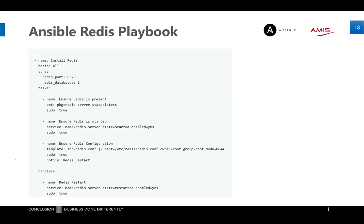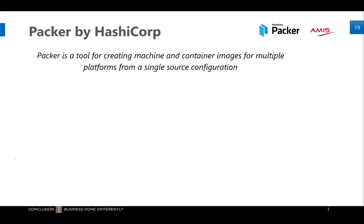This is an example of an Ansible playbook to install Redis on a host. You specify on which host it executes, then you define variables: which port, how many databases. Then the tasks the playbook needs to do — for example, checking if Redis is available, installing it via APT, starting the service, doing some configuration, and at the end restarting the service so everything is up and running.